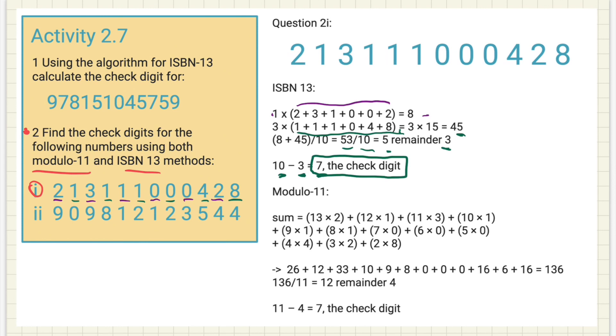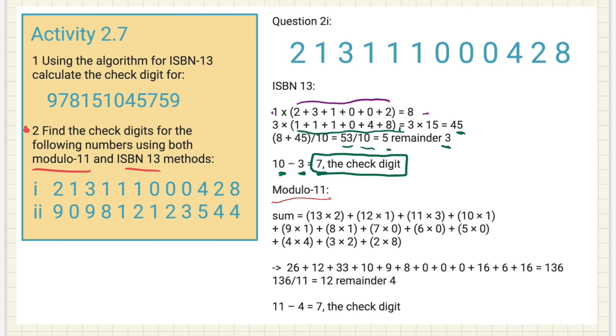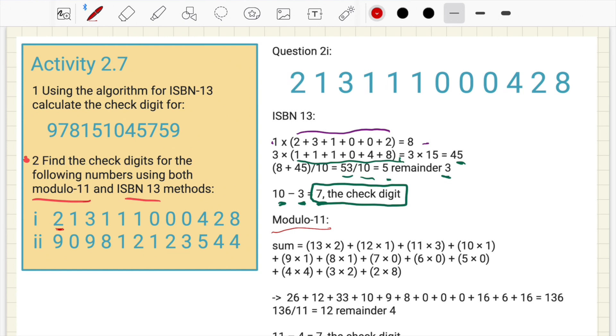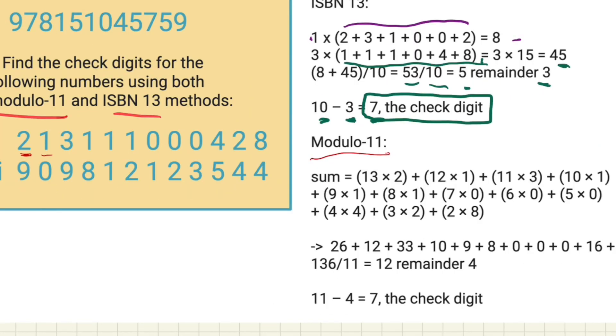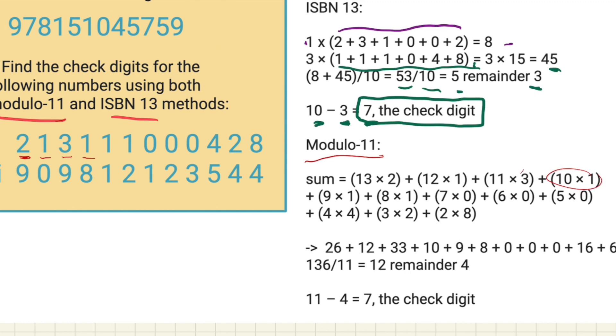Now modulo-11 works in a different way. What we're going to do with this one, we're going to times the first number. This is, I think, is the easiest way of doing it. It might be a little bit different in the book, but this is how I would do it. What we're going to do is, starting with 13, we're going to multiply 2 by 13, for some reason. This is modulo-11, so it does seem strange. Multiply that by 13, multiply 1 by the 12, 3 by 11, 1 by 10, as you can see here. And then we carry on.